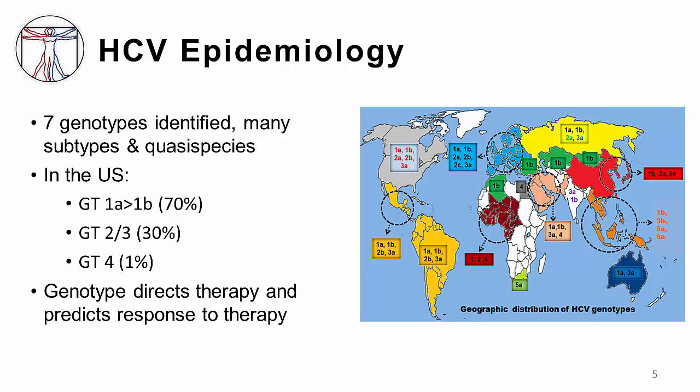There have been seven different genotypes of hepatitis C described to date. In the U.S., genotype 1 infection is the most prevalent, with subtype A being slightly more common than subtype B. Genotype 2 and 3 are the next most common genotypes, infecting around 30% of hepatitis C patients. Genotype 4 exists in the U.S. but is relatively rare. Genotype is important because it helps direct the type of therapy used and also somewhat predicts the response to treatment.